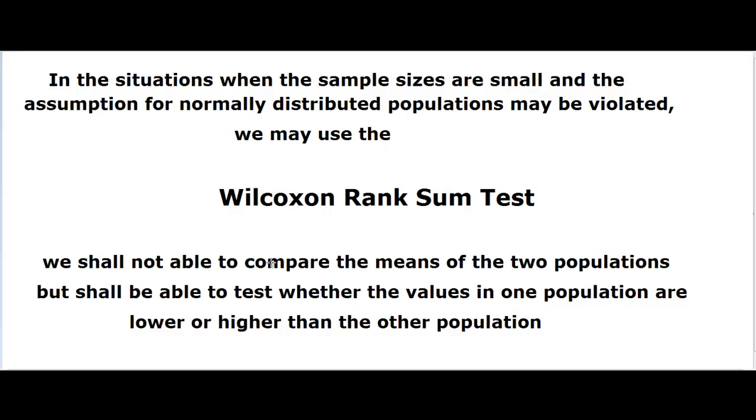In such situations, when we have sample sizes really small and the assumptions for the normally distributed population may be violated from the indications from the sample, one of the ways to handle that is this test, it is called Wilcoxon rank sum test. We call it non-parametric because we would not be able to compare the means of the two populations, but we may still be able to see whether the values in one population are lower or higher than the other population, or if there is a shift.